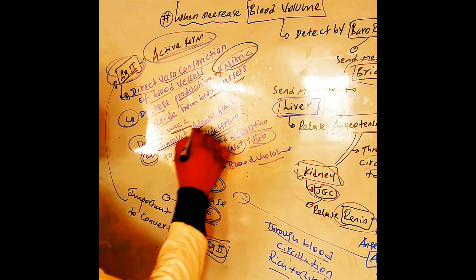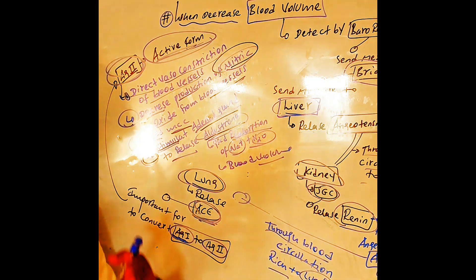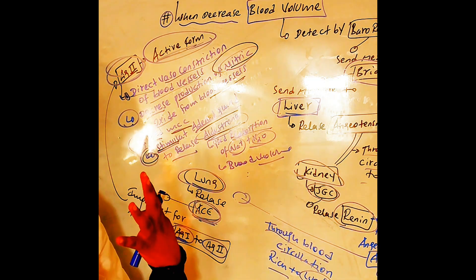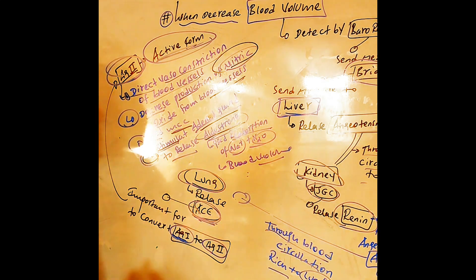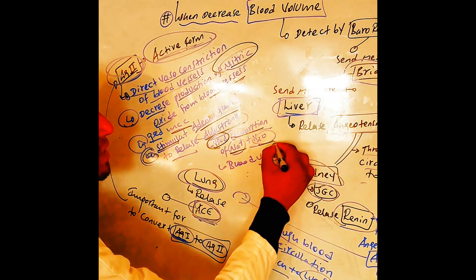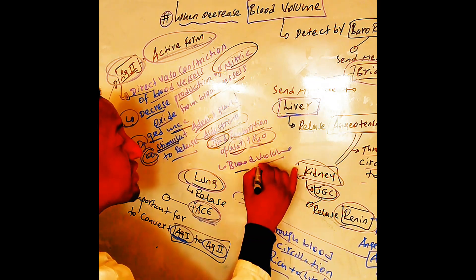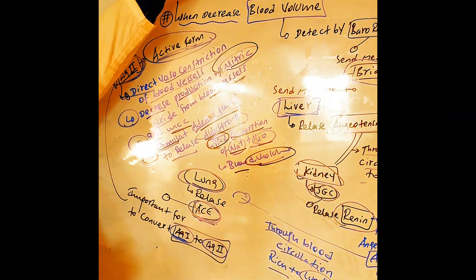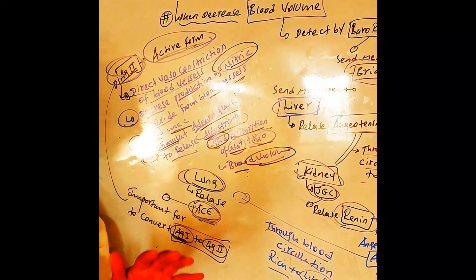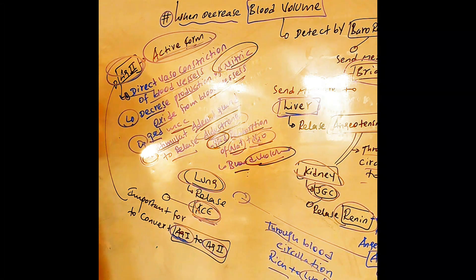Angiotensin II stimulates the adrenal gland to release aldosterone. The adrenal gland's cortex part releases aldosterone. Aldosterone acts on the tubular structure of the kidney, increasing reabsorption of sodium and water. Sodium reabsorption returns to systemic circulation. This system is important to increase blood volume when different factors cause decreased blood volume.